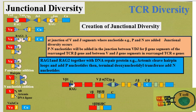Now we are going to discuss the creation of junctional diversity. It is actually created at the junction of variable and joining segments, where nucleotides — for example P and N nucleotides — are added.